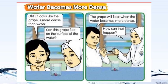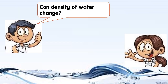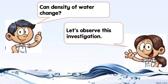Now let's read the conversation together. It looks like the crab is more dense than water. Can this crab float on the surface of the water? The crab will float when the water becomes more dense. How can that happen? Can the density of water change? Let's observe this investigation.